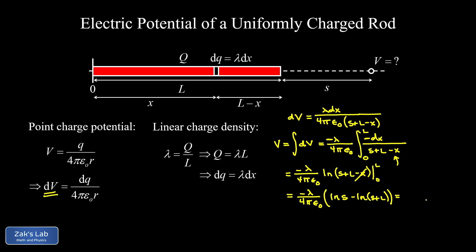We can clean that up a little bit using log properties. One thing I'm going to do here is distribute the minus sign from out in front into those parentheses. That reverses the direction of the difference, and I end up with natural log of S plus L minus natural log S. But that can be written as a fraction. So this cleans up to λ over 4πε₀ natural log of (S plus L) divided by S. Now there's one more thing we typically do here. The original problem was given to us in terms of Q and L instead of λ. So we're just going to replace λ with the total charge divided by the total length. And I end up with the potential off the tip of this uniformly charged rod: Q over 4πε₀L multiplied by the natural log of (S plus L) over S.